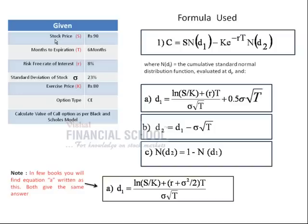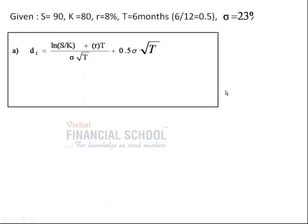Given is the stock price is around 90, time for expiration is around nine months, risk-free interest rate is 8%, standard deviation of the stock is around 23%, expected price or the strike price at which I would like to exercise my option is at 80 rupees. The option type is European call option. We need to calculate the call option using the Black-Scholes model.